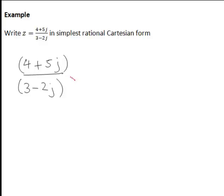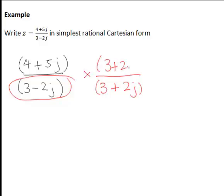And here the denominator is 3 minus 2j, so the complex conjugate of that, the imaginary part will change sign, making the complex conjugate 3 plus 2j. Hence here we would be multiplying numerator and denominator by 3 plus 2j.